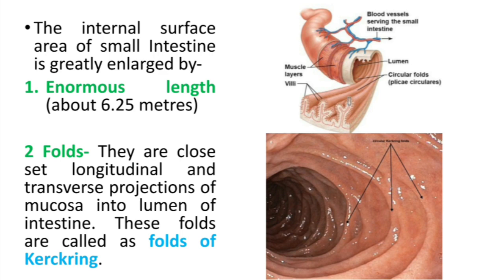As absorption mainly occurs in the small intestine, that is why the internal surface area of small intestine is greatly enlarged by its enormous length, that is about 6.25 meters or approximately 20 feet. It also has folds — close-set longitudinal and transverse projections of mucosa into the lumen of intestine. These folds are called folds of Kerckring.